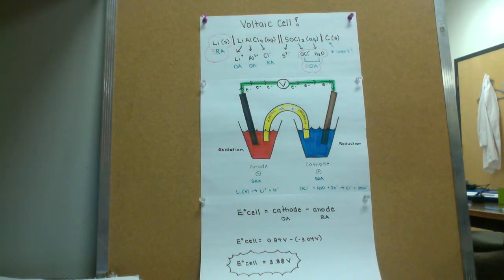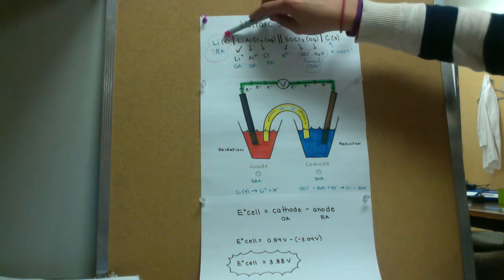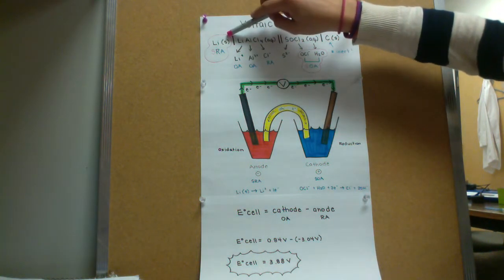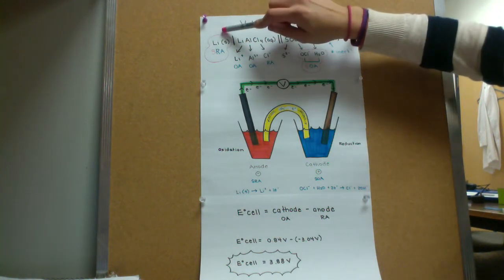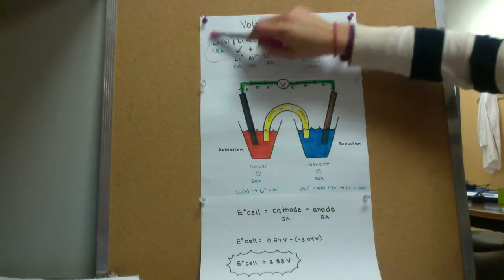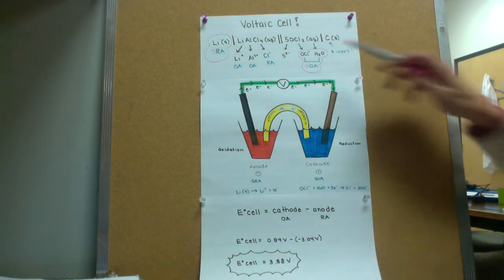We then identify the strongest reducing and strongest oxidizing agent. We have discovered that lithium solid is the strongest reducing agent on the chart. This will become our anode, as it will be oxidized within the reaction.